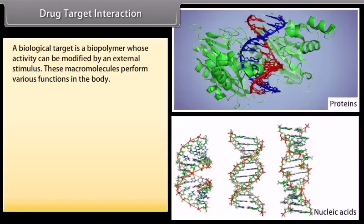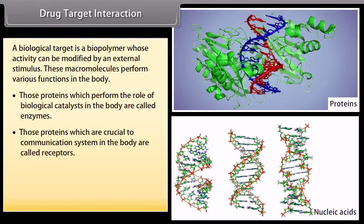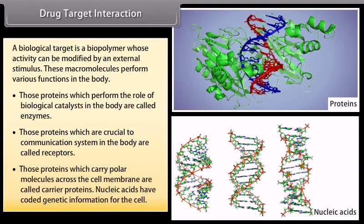Drug-target interaction: a biological target is a biopolymer whose activity can be modified by an external stimulus. Those proteins which perform the role of biological catalysts in the body are called enzymes. Those proteins which are crucial to the communication system in the body are called receptors. Those proteins which carry polar molecules across the cell membrane are called carrier proteins. Nucleic acids have coded genetic information for the cell.